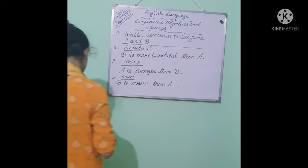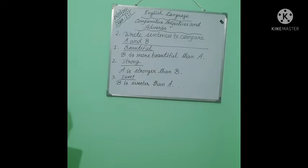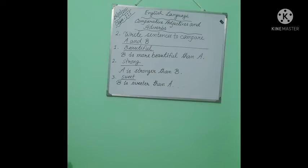So look at this. I have written sentences. Number 1: beautiful — B is more beautiful than A. Number 2: strong — A is stronger than B. Number 3: sweet — B is sweeter than A.